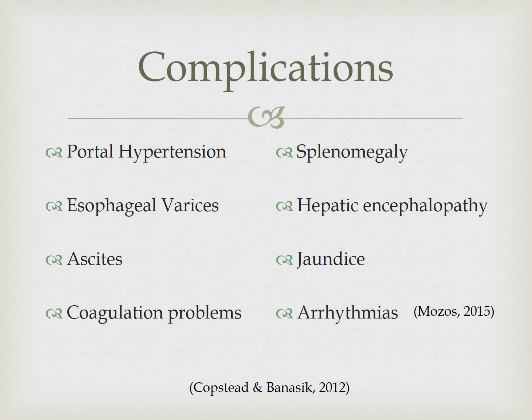Increased portal hypertension can cause the spleen to become enlarged and retain white blood cells and platelets, leading to splenomegaly. Ascites is also a symptom of cirrhosis — it's an accumulation of fluid in the peritoneal cavity due to increased pressure from portal hypertension. Plasma proteins such as albumin pull fluid out of the vessels and into the tissues, and the impaired liver is unable to synthesize albumin and pull the fluid back into the bloodstream. Massive ascites can cause decreased urinary output, which stimulates the renin-angiotensin system.